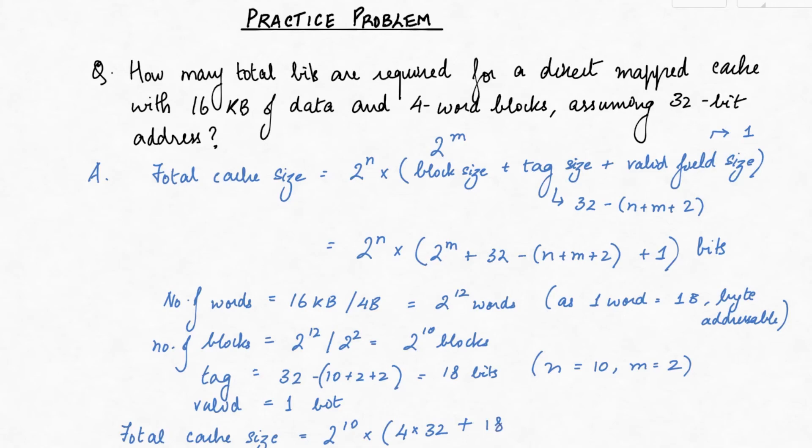which results in 2 to the power 10 into 147, which is 147 kb.